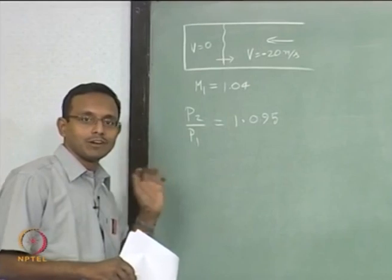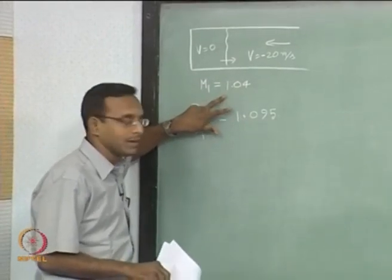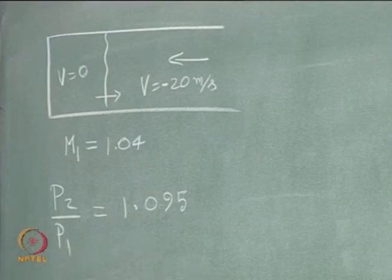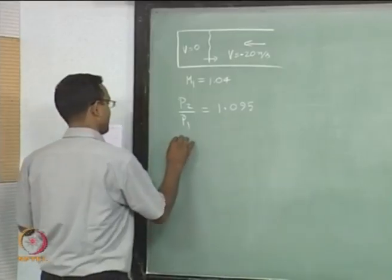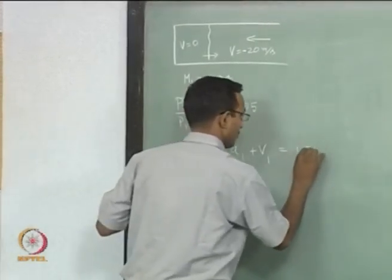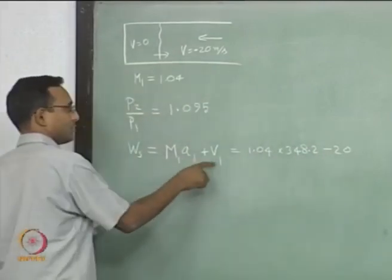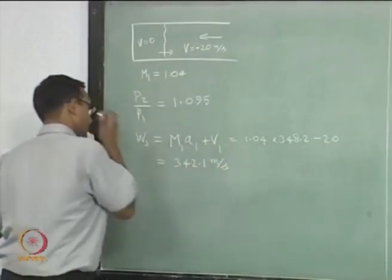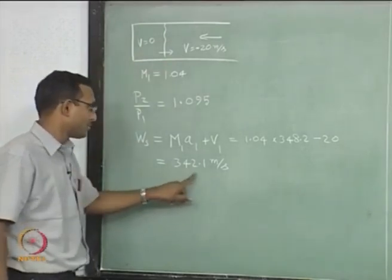So if I have a 20 m/s flow in a duct and I suddenly stop it, I am creating a shock which is travelling supersonically and it is going to have a strength of 1.095. The pressure in the duct is increasing by 9.5%, and that is what is causing the flow to come to rest. If I want to find the shock speed using the formula with V1 = minus 20, this answer happens to be 342.1 metres per second.